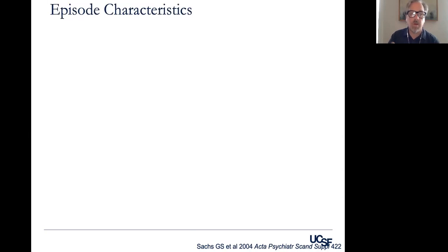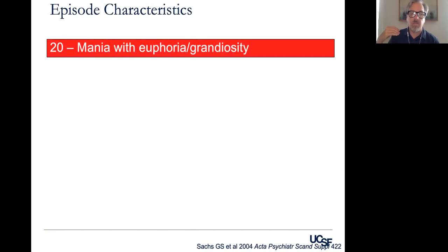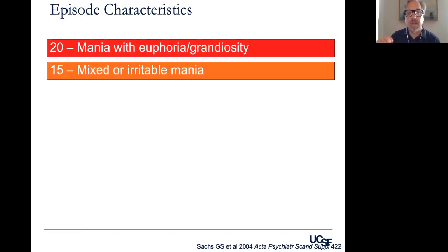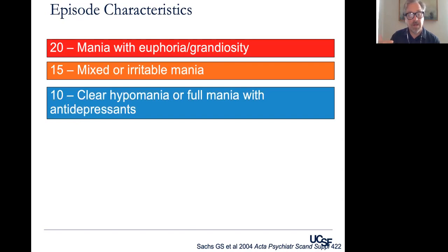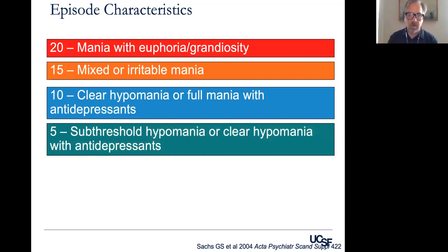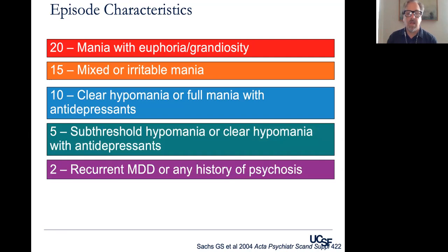Then we look at the characteristics of the mood episode. People who get full-blown mania — they're grandiose, euphoric, going days without sleep — that's most convincing of bipolar I, and gets the full 20 points. People with more of a mixed presentation, where they have depressed mood episodes but a lot of energy, are also suspicious for bipolar disorder, but not quite the slam dunk. This starts to capture people likely in bipolar II, assigning 10 points to those with clear hypomania or who kick into mania with antidepressants. Recurrent depression with no history of mania whatsoever gives us only two points.